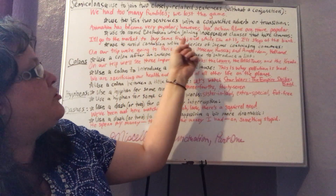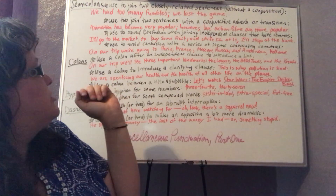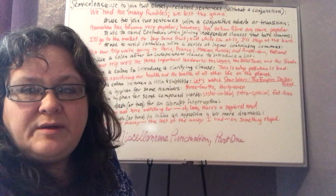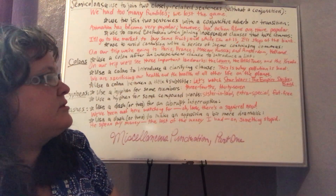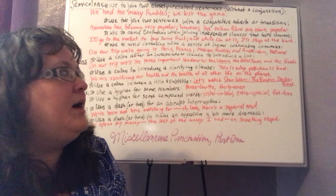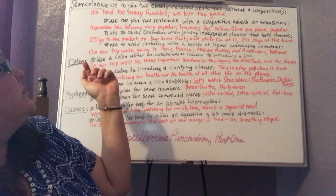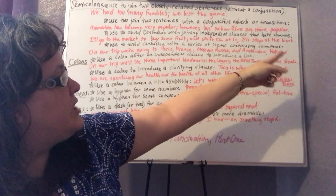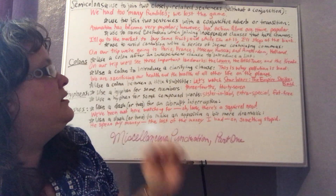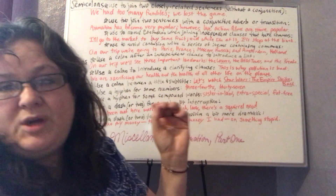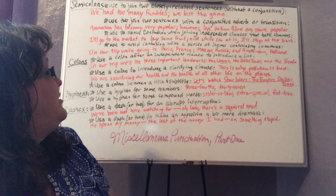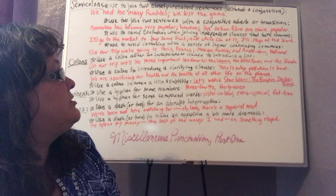Next: use a semicolon to avoid confusion when joining independent clauses that have commas. In this case it would be grammatically correct to just have a comma, but a semicolon helps the reader follow the thought better because there's already a comma and it becomes a little confusing. What we like in English is to make things as simple and easy to follow as possible. So: 'I'll go to the market to buy some fruit; and while I'm at it, I'll stop at the bank.' Here we have a complex sentence with an introductory adverb clause — it's perfectly fine to have a semicolon there.